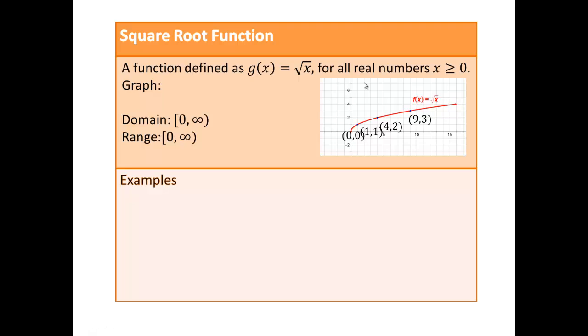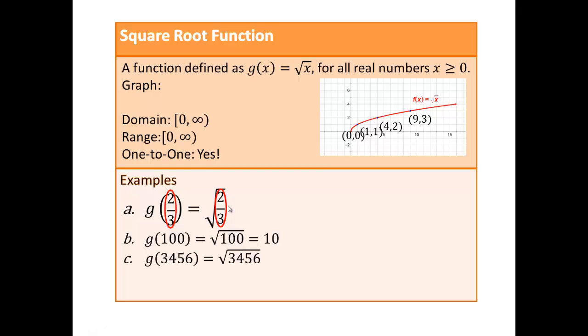And then what about 1 to 1? Do you think this function is 1 to 1? Well, if you look, any input produces one output. So yes, this function is 1 to 1. So let's do some examples here. We have g(x) is square root of x. So what do you think will happen if I wanted to input 2 thirds? So I would replace x with 2 thirds and so 2 thirds is taking the place of this x right here. Can you see that? So g of 2 thirds is square root of 2 thirds. So g of 100 would be square root of 100 or 10. What about g of 3,456? Then that would be square root 3,456.